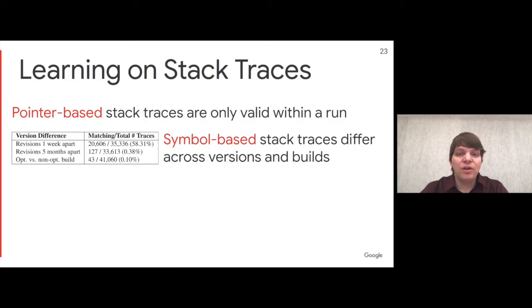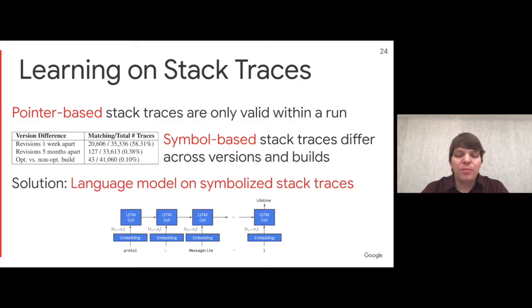However, symbolized stack traces are not stable between different variants of the same application. We looked at two versions of an application built from code snapshots one week apart, and found that only 58% of stack traces matched. With versions five months apart, almost no stack traces match. There are also different compile time options. We therefore need a more complex approach to make predictions for stack traces we haven't seen before.